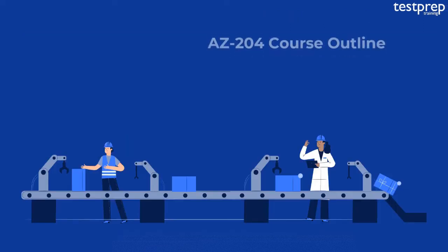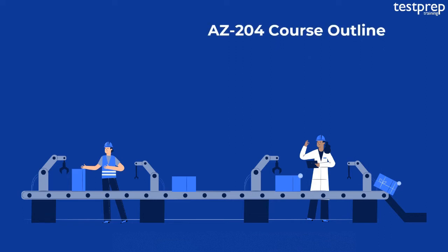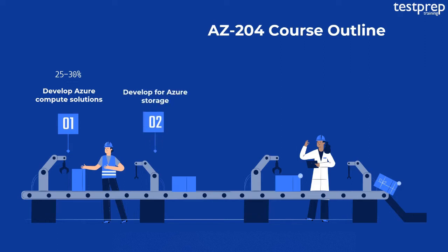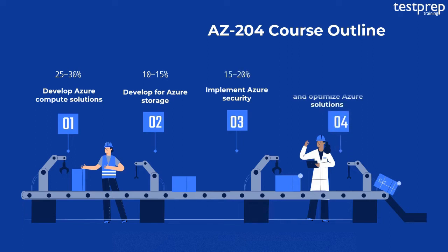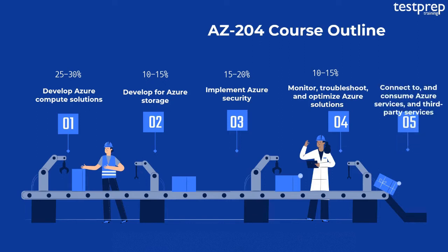Now we will discuss the AZ-204 Course Outline. It is extremely important to have an in-depth understanding of the subject and course outline so that you do not miss important details. The topics covered are: First, Develop Azure Compute Solutions, which comprises 25 to 30% weightage. Second, Develop for Azure Storage, 10 to 15%. Third, Implement Azure Security, 15 to 20%. Fourth, Monitor, Troubleshoot, and Optimize Azure Solutions, 10 to 15%. Fifth, Connect to and Consume Azure Services and Third-Party Services, 25 to 30% weightage.